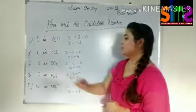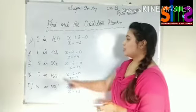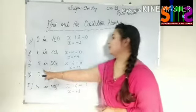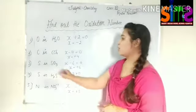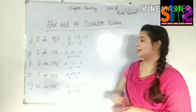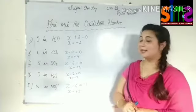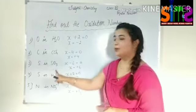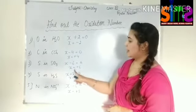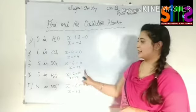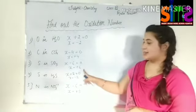Next, sulfur in SO₃. If you don't know sulfur, let's take 1 oxygen as minus 2. Minus 2 and 3 oxygens gives minus 6. Equal to 0 — no charge present is equal to 0. Here you can find out the value of X: plus 6. This means the oxidation number of sulfur in SO₃ is plus 6.